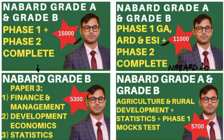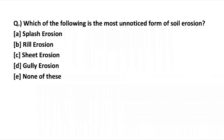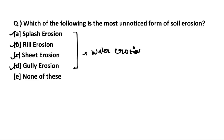Now let's begin with the first question. Which of the following is the most unnoticed form of soil erosion? The options are splash erosion, rill erosion, sheet erosion, and gully erosion. These are all forms of water erosion, and it's very important to know these subcategories.